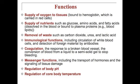The functions of the blood can be found on page 697. First, blood supplies oxygen to tissues — it is bound to hemoglobin, which is carried in the red blood cells. Second, it supplies nutrients such as glucose, amino acids, and fatty acids, which are dissolved in the blood or bound to plasma proteins.